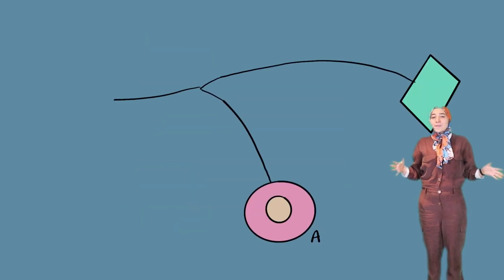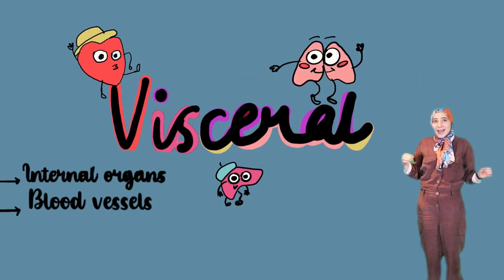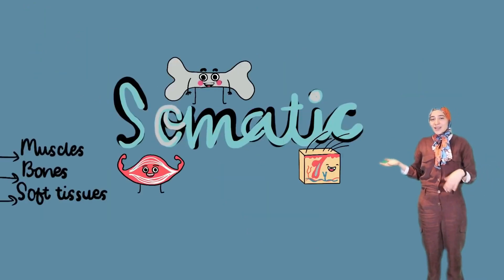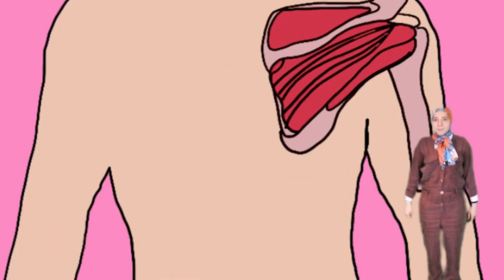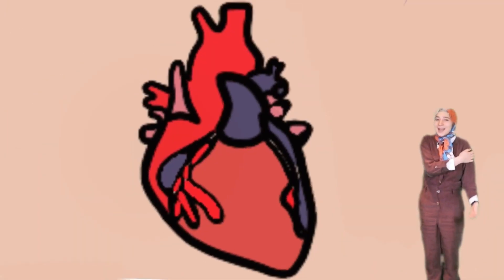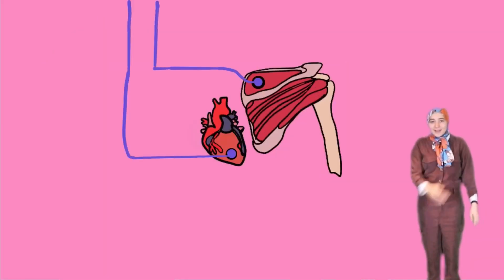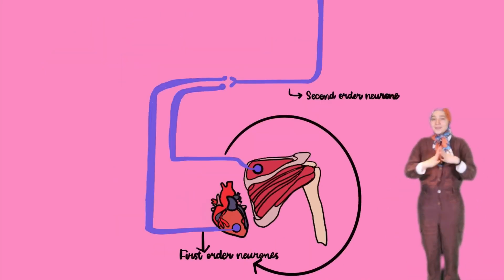Signals from different parts of the body may come from the same neuron, so your brain can't always distinguish between the visceral signals and the more common somatic signals. Patient X, for example, experienced shoulder pain but was actually having a heart attack — because the shoulders and the heart share the same second-order neuron.